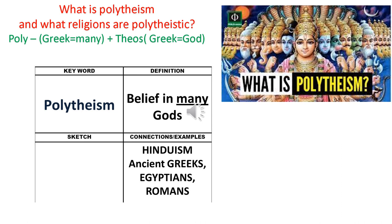So what about polytheism, and what religions are polytheistic? Poly from Greek means many, and Theos means God. People who follow polytheism believe in many gods. Examples of polytheistic religion include Hinduism, ancient Greeks, Egyptians, and Romans.